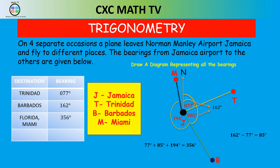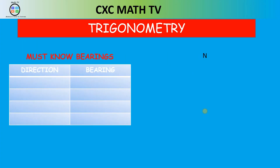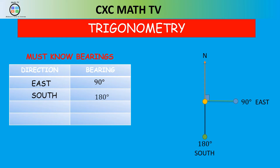If you know that all of that angle is 162, then the angle going around back to Miami would be 194, because if you add 77, 85, and 194 you get 356. A key takeaway: measuring from the north line, going directly east is a bearing of 90 degrees; going south is 180 degrees; and going west is 270 degrees. Those are must-know bearings.